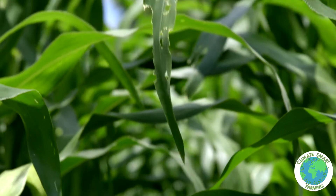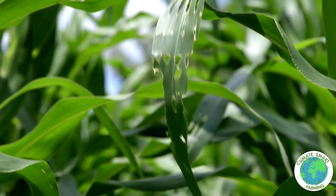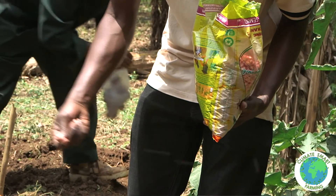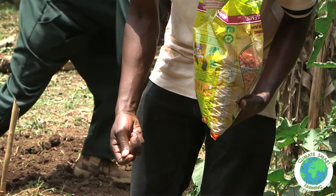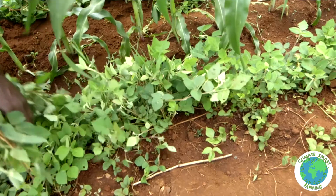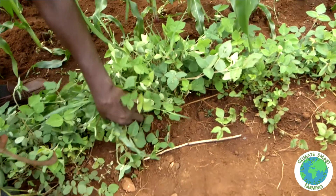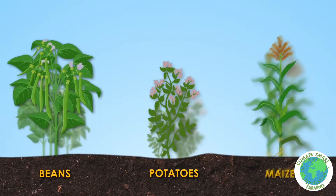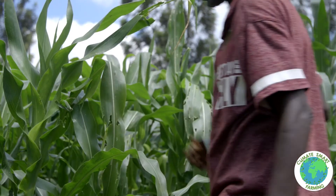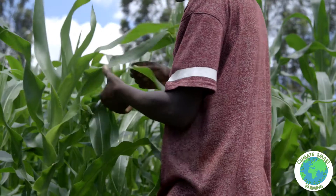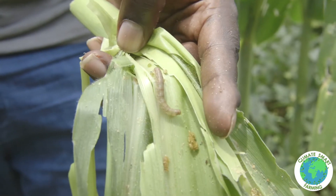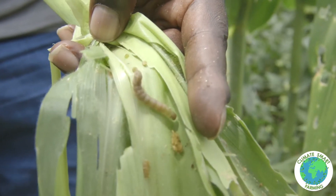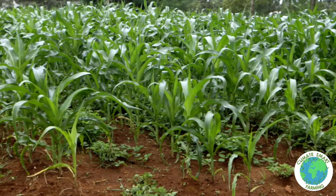Do the following to reduce pests and diseases in your maize: plant certified seeds, keep your farm weed-free, rotate your crop every season, and scout for pests and diseases regularly and treat them as you see them.